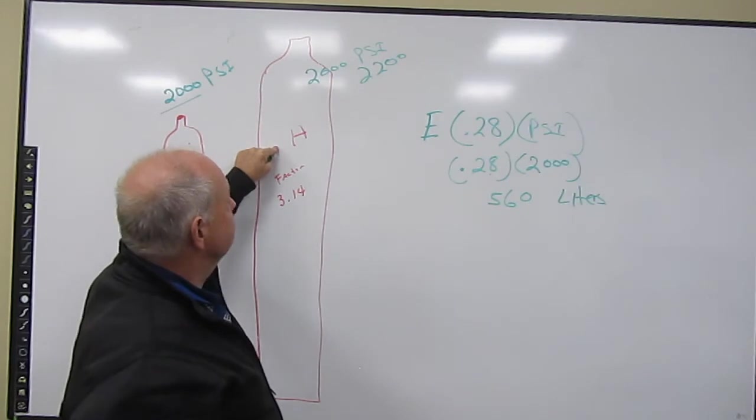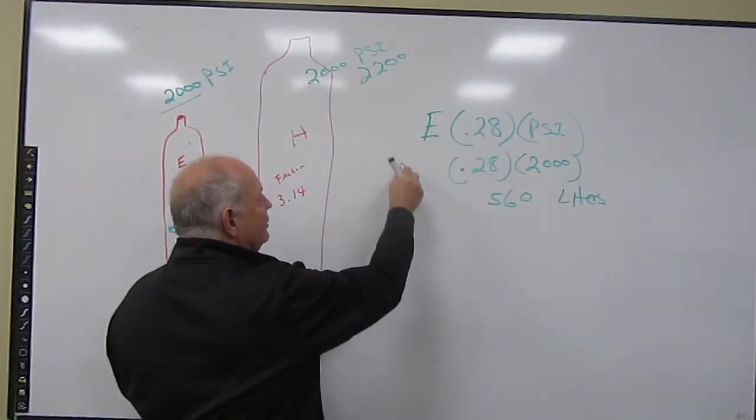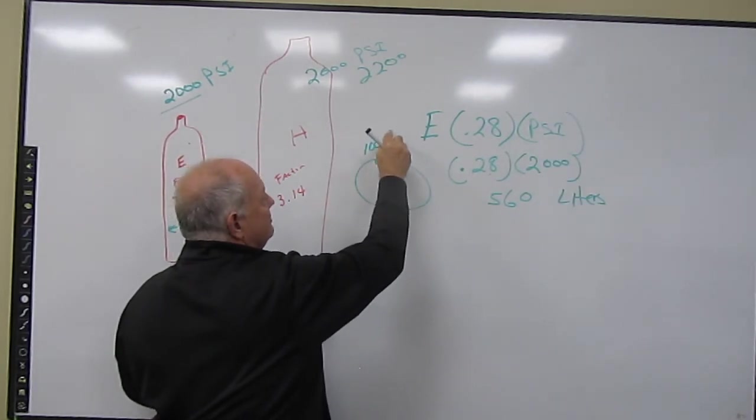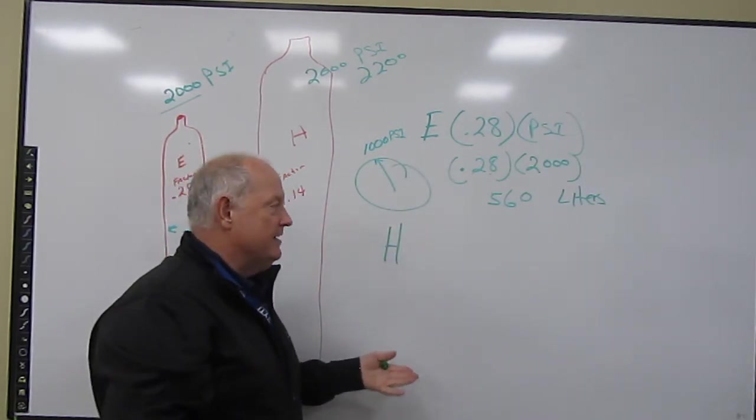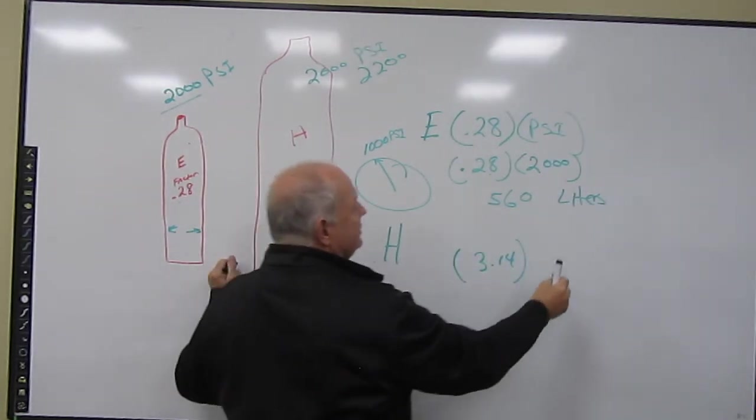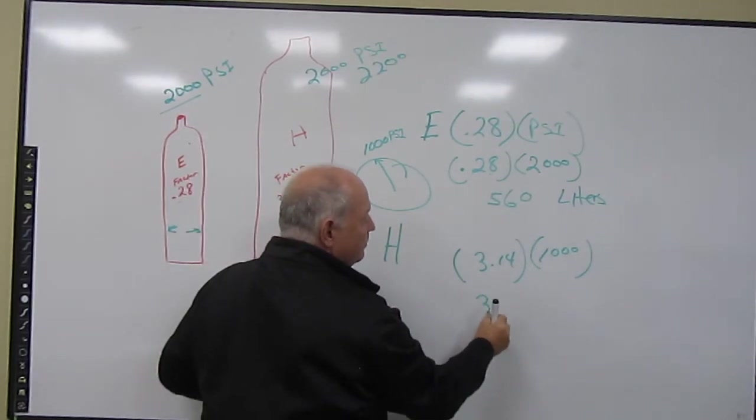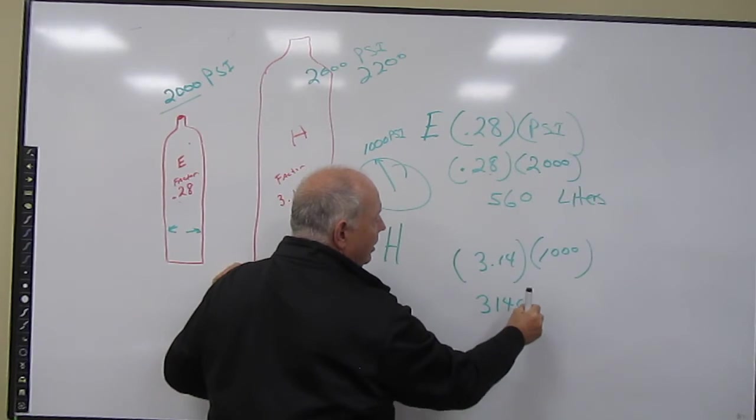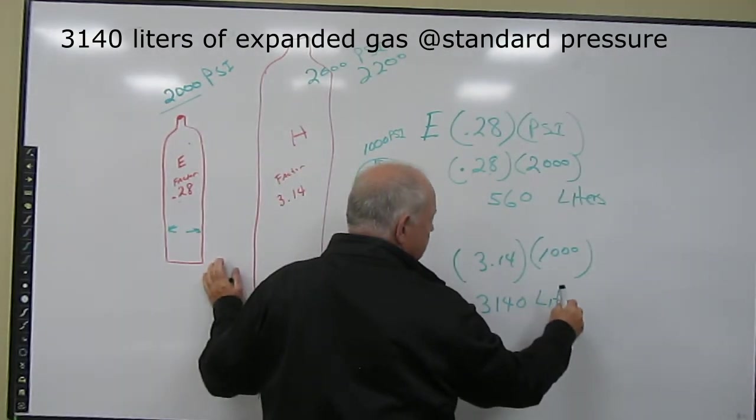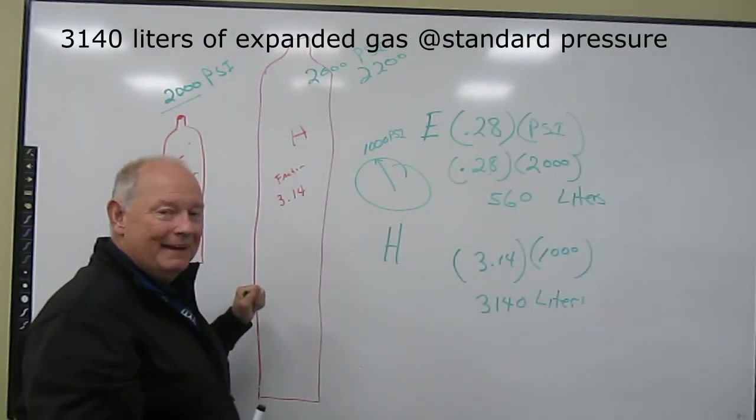Now this is an H-cylinder and it has a factor of 3.14. So let's say here we have an H-cylinder and we look at the gauge and the gauge is reading right here 1,000 pounds per square inch. What volume do we have in it? We have 3.14 times 1,000. So we can say 3,140 liters are in a H-cylinder with 1,000 pounds per square inch.